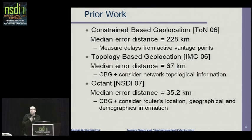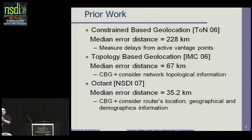Next, in IMC 2006, there was a paper by people from University of Washington. The idea was that you don't have to probe only from endpoints — you have routers on the way to that target, and if you use those routers that gives you more information. By constraining using that information, you can do much better. Indeed they did much better: the median error distance is 67 kilometers in this case.